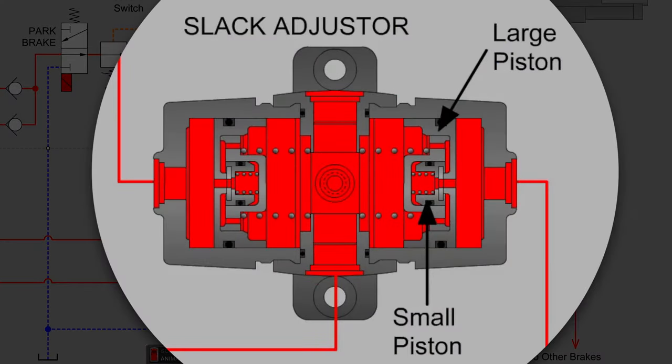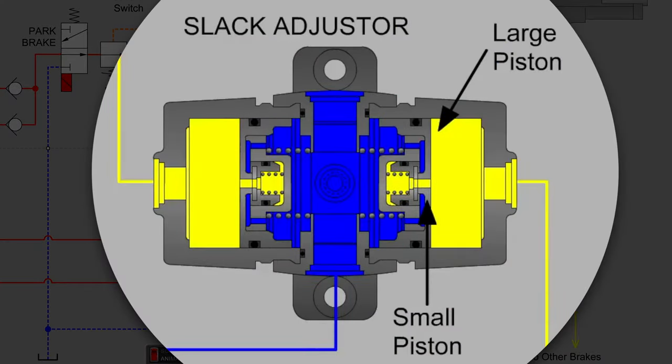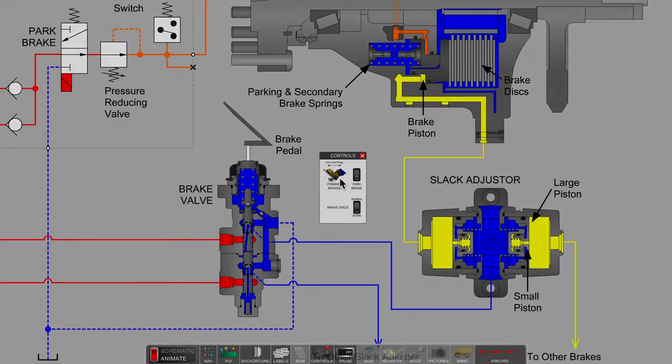And when the operator takes his foot off the brake pedal, the pressure in the brake piston is relaxed, and fluid is returned to the yellow area on the left side of the large piston. We're only dealing with the left side of the slack adjuster. We only have one of four wheel spindle housings that are typically on a grader. We're only showing one of four in this video.